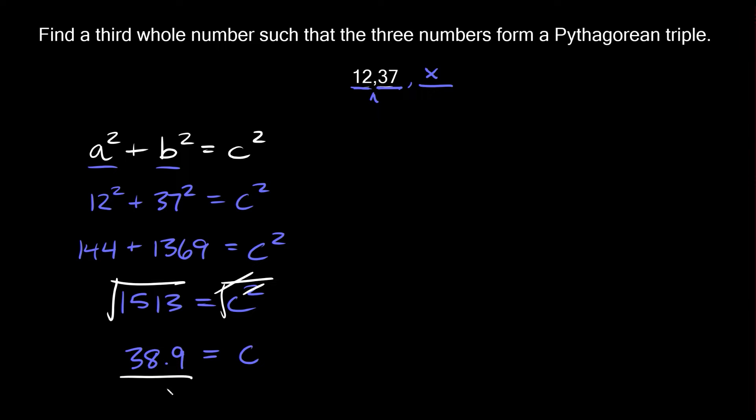Since we got a decimal then we obviously did something wrong, and what we did wrong was assuming that 12 and 37 were the two shorter sides, that's why we plugged them in for a and b.